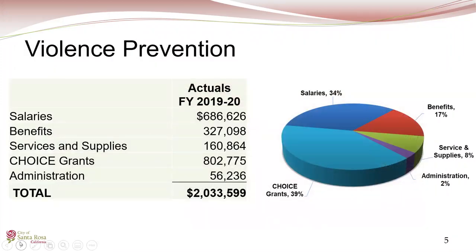Parish advances to the next slide and notes that the reserve for encumbrance and project commitments reflects the fact that the Choice Grant program operates on a calendar year. This accounts for roughly half of total annual expenditures remaining after January 1st. Personnel make up approximately half of overall violence prevention program costs, including $160,000 in temporary seasonal employees providing direct field services.